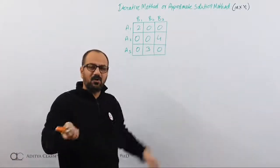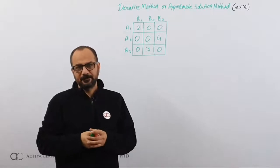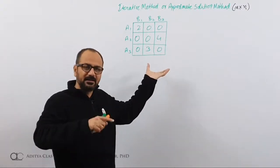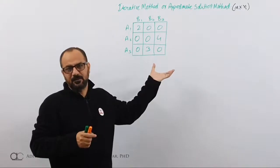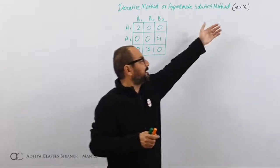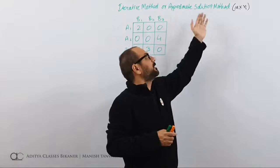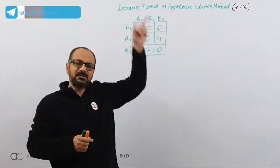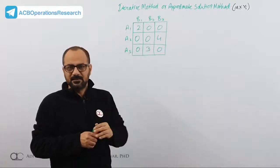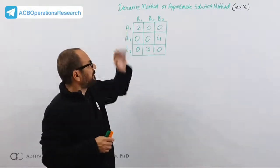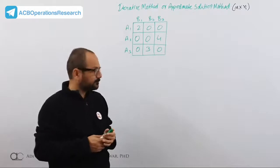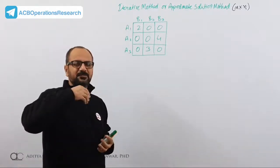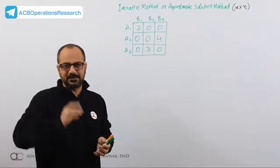So either you can get your approximate solution using the iterative method, or you can move to simplex — you can create a linear model of this game and solve it using simplex. Simplex we will see in some other lecture. For now, we are talking about the iterative or approximate solution method. In this method, you can start the game from any of the strategies for any of the players.